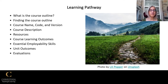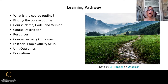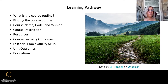We will talk first about what is a course outline, we'll show you how to find your course outline, and then we're going to look at the various components of a course outline, including the name, code and version, the description, resources, course learning outcomes and unit outcomes, essential employability skills, and evaluations.